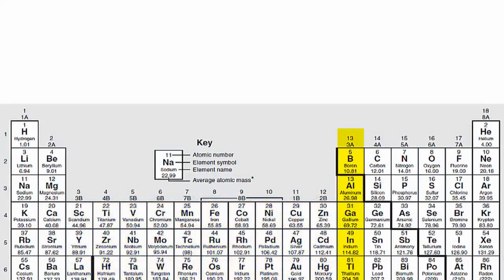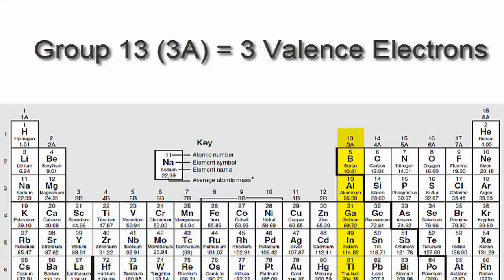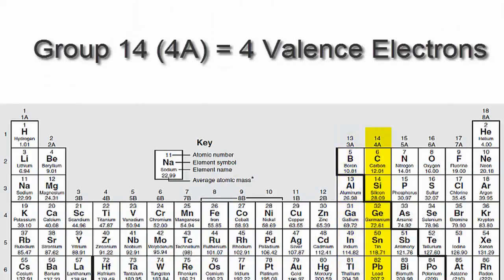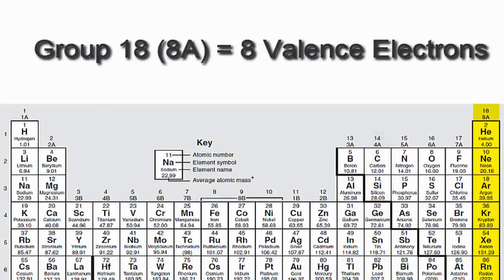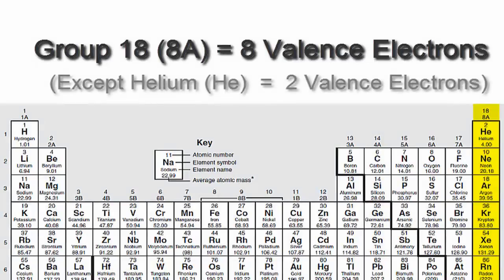We'll go to 13 or 3A, which have three valence electrons, then 14 or 4A. Each of those elements in group 14 or 4A have four valence electrons, all the way up to group 18 or 8A, which have eight valence electrons.